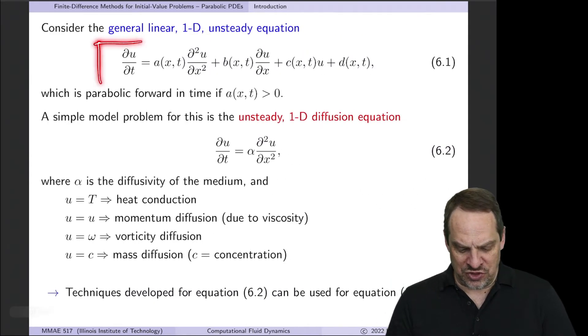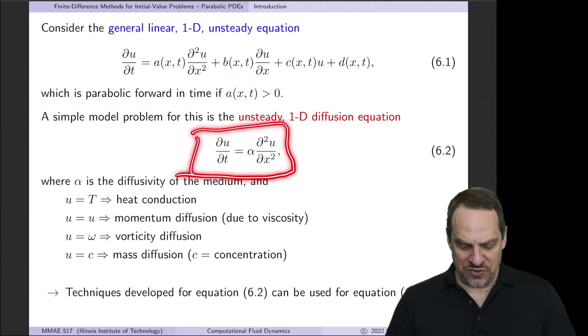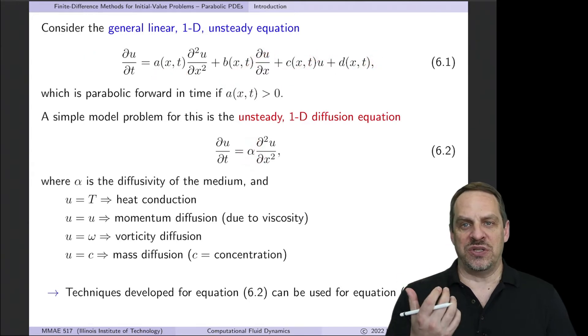Now we could think in terms of a general, unsteady 1-D linear partial differential equation. So ∂u/∂t is equal to some variable coefficient a(x,t) times ∂²u/∂x², then a first derivative term, a zeroth order term, and then a forcing term. We'll look primarily at the unsteady 1-D diffusion equation, which is just a simplified version of this without these terms, and the a is just alpha, alpha being the diffusivity.